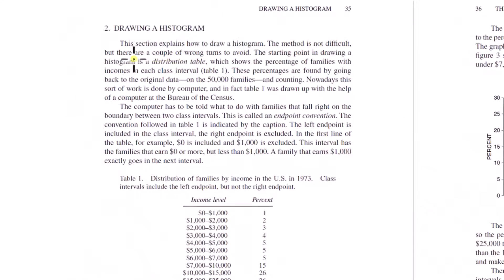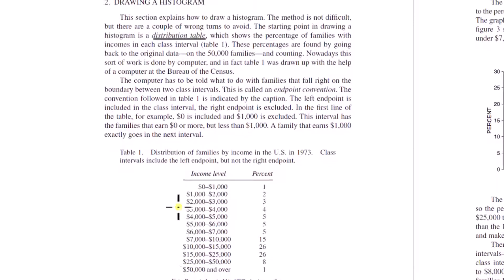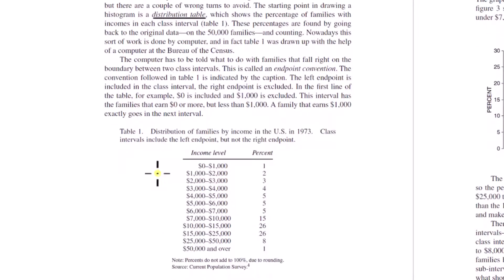The method is not difficult, but there are a couple of wrong turns to avoid. The starting point in drawing a histogram is a distribution table, which shows the percentage of families with incomes in each class interval. This is the problem we started with in section one — the income distribution in the United States as it was in 1973. To make a histogram, you start with a distribution table like this, and decide what your class intervals are going to be: zero to one thousand, one thousand to two thousand, two thousand to three thousand.